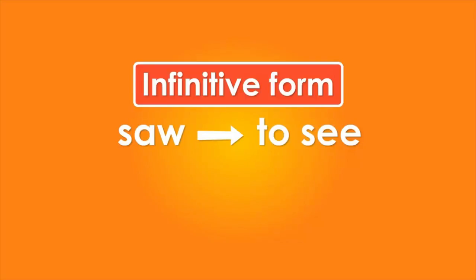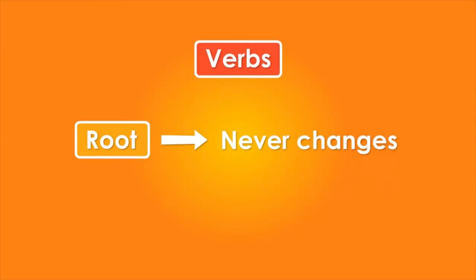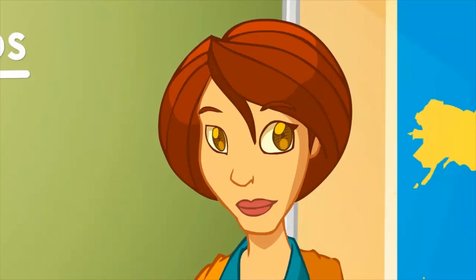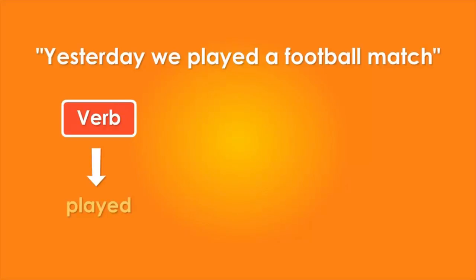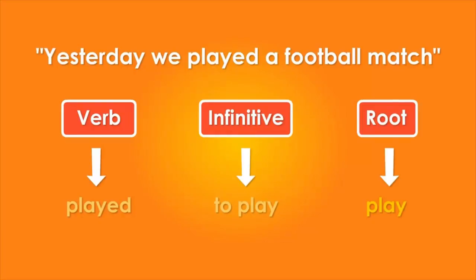In the case of the second verb, what Matt loves doing is 'to play.' We're trying to find the infinitive form of some verbs. All words — and of course verbs too — have a part which never changes; that's called the stem of the word. For example: 'yesterday we played a football match' — the verb is 'played,' the infinitive is 'to play,' and if we take out the ending '-ed,' what remains is the stem: 'play.'